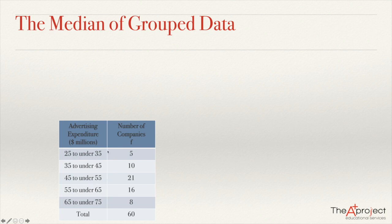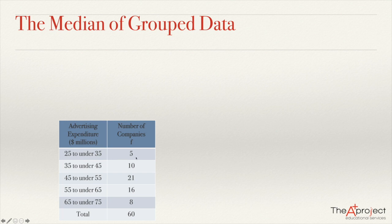Here we have a table we saw in a previous video for the mean of group data. These are 60 companies that were researched to see how much they spent in advertisement in millions of dollars. So when I see five companies, it means that there are five companies that spend between 25 and 35 millions of dollars, and there are 10 companies whose expenditure is between 35 and 45 million of dollars, and so on.